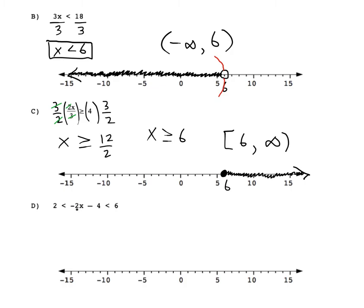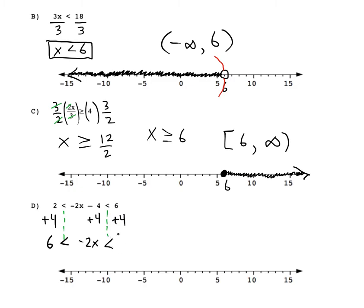Sometimes we may see compound inequalities where x is going to be between two numbers. When that happens, we have to perform operations to all three sides of the inequality. To get the negative 4 away from x, I want to add 4, but I can't just do it to the middle — I have to do it to the right and the left as well. So 2 plus 4 makes 6, we bring down the inequality sign, and we're left with negative 2x in the middle, giving us 6 is less than negative 2x is less than 10.